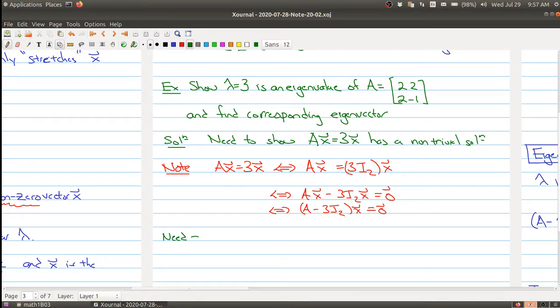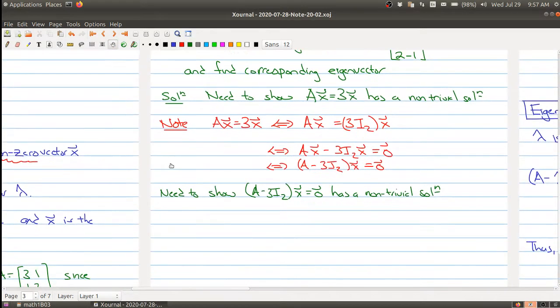We need to show (A - 3I)x = 0 has a non-trivial solution. So we're turning our original question into a question about checking whether a homogeneous system of equations has a non-trivial solution and so we know how to do that.